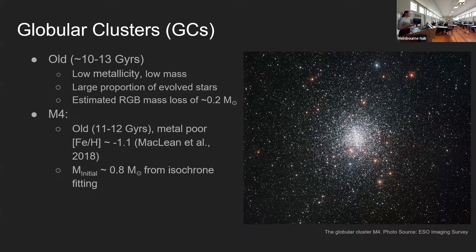I was looking at the globular cluster M4, which is the closest globular cluster to Earth. It has all the typical properties of being old and metal poor, and we know from isochrone fitting that the stars have an initial mass of about 0.8 solar masses. To measure integrated RGB mass loss we need to find the mass difference between the start of the red giant branch and the horizontal branch.